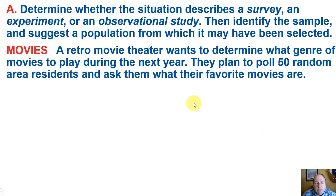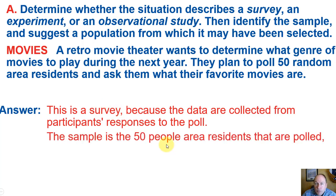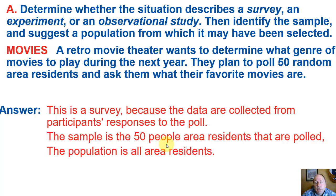Let's classify those three different types of studies. Retro movie theater wants to determine what genre of movies to play. During the next year, they plan to poll 50 random area residents and ask them what their favorite movies are. This is a survey because we're collecting data from participants' responses to the poll. The sample is the 50 people from the area, and the population is the entire area. Statistics is about analyzing data from a small group that's still representative of the entire population.